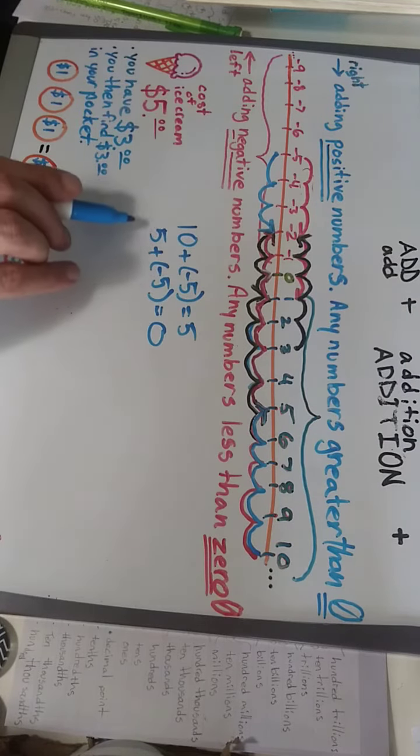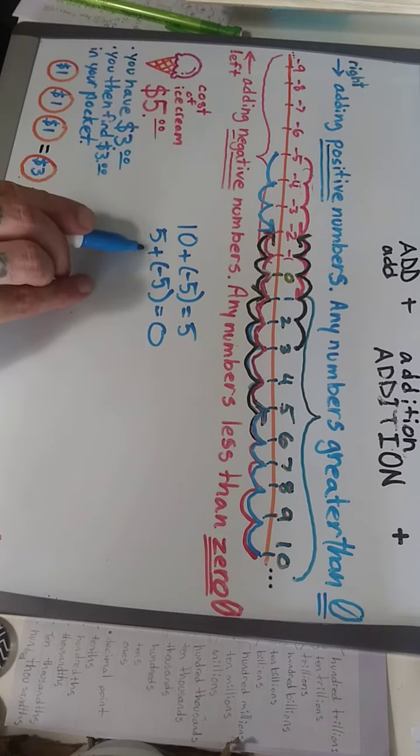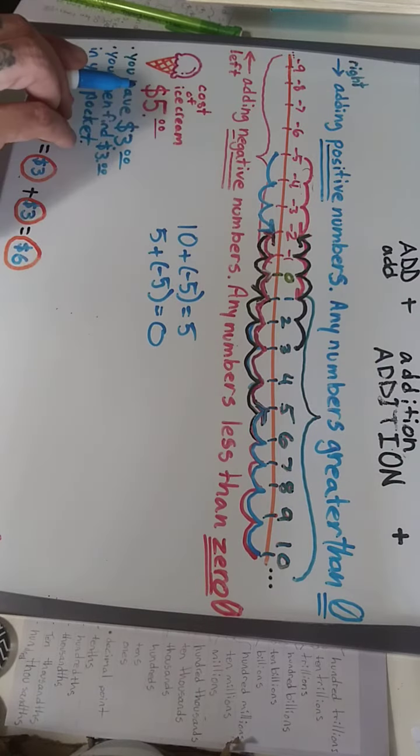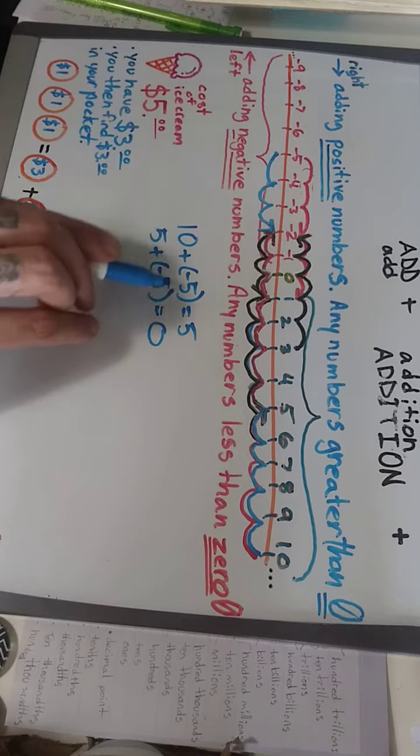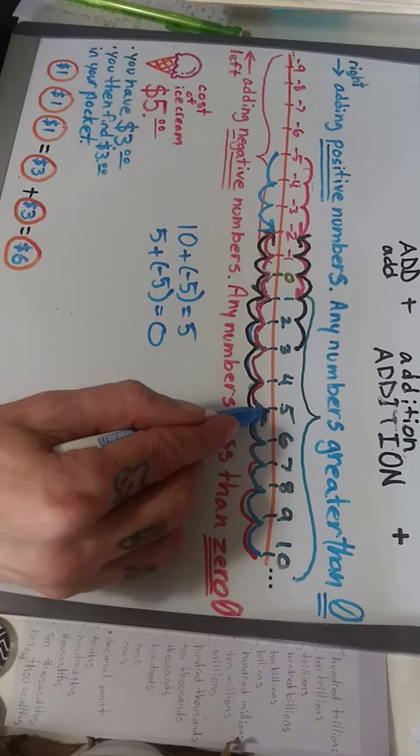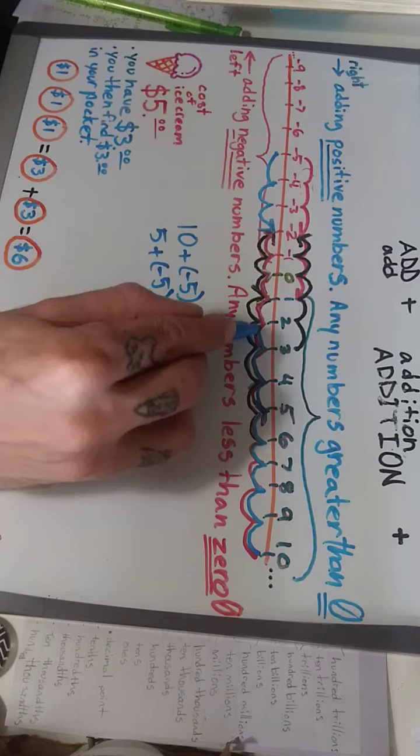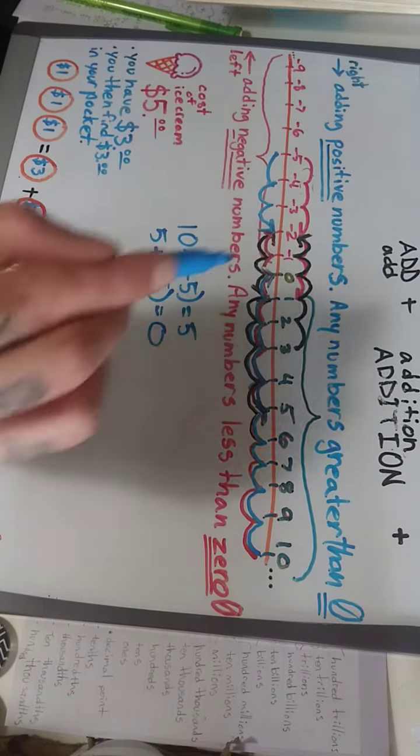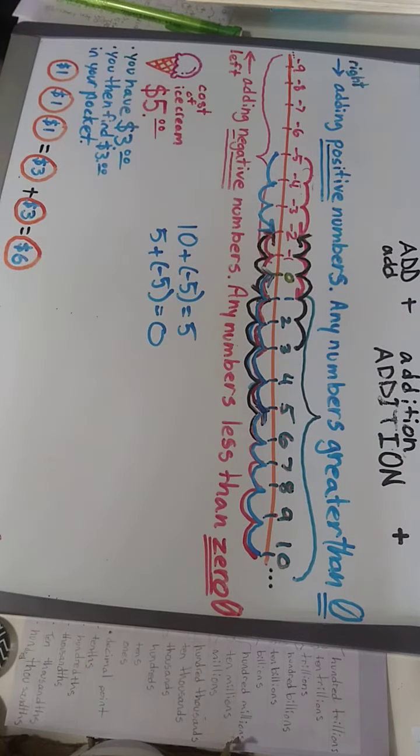the addition of our five dollars plus the cost of the ice cream, five dollars represented as negative five. So we start at the five, we move over one, two, three, four, five, and we're left at zero.